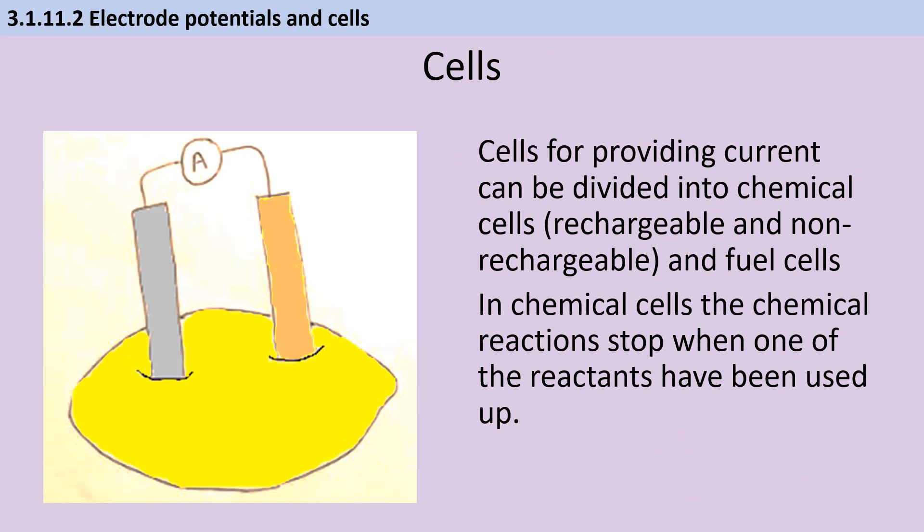Electrochemical cells can be split into three types. Firstly, we divide them into chemical cells and fuel cells, and then chemical cells can be divided further into reversible cells that you can recharge, and irreversible cells which you can't. In a chemical cell, the chemical reaction stops once one of the reactants has been used up. If it's a rechargeable cell, you then apply a big voltage to reverse the reaction and turn the products back into reactants so that you can use it again. But in an irreversible cell, that's not possible, usually because one of the products has then gone on to react further. In contrast to that, a fuel cell doesn't ever stop working, because you're constantly supplying the reactants, and so they're never going to run out in the first place.